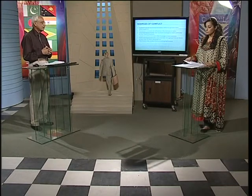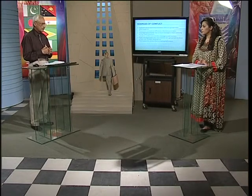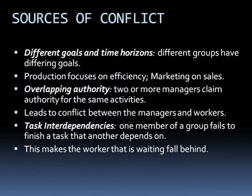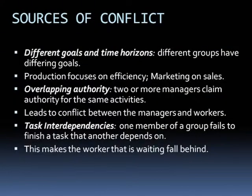He must be conscious of the different sources so that if he has to go back and visit the source or analyze it, he would suggest to resolve according to that source. So here are the sources of conflict. Different goals and time horizons — different groups have differing goals. Production focuses on efficiency, marketing on sales. Overlapping authority is when two or more managers claim authority for the same activities, which leads to conflict. Task interdependency is when one member of a group fails to finish a task that another depends on, making the waiting worker fall behind.